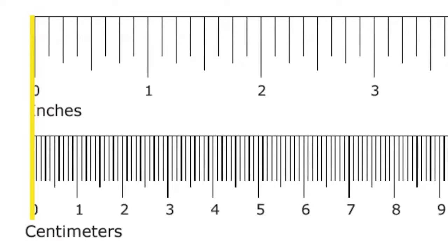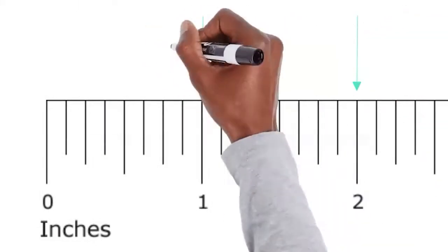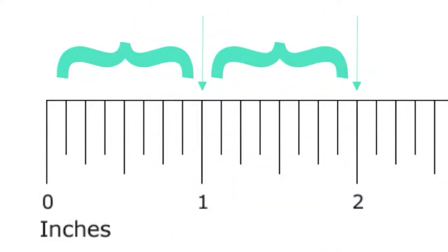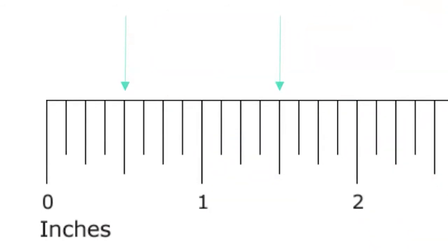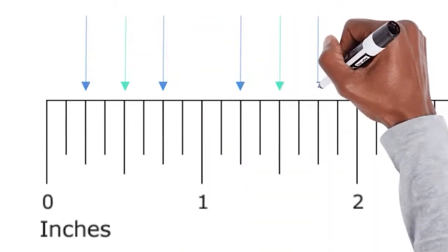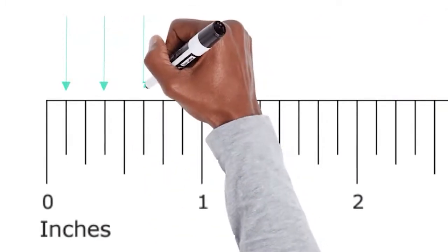A ruler is just a number line. Let's look at an inch ruler. The numbers show whole inches. The lines in between show fractions of an inch. The longest line in between is the half inch mark. The next longest lines mark one fourth and three fourths. The shortest lines mark the eighths.